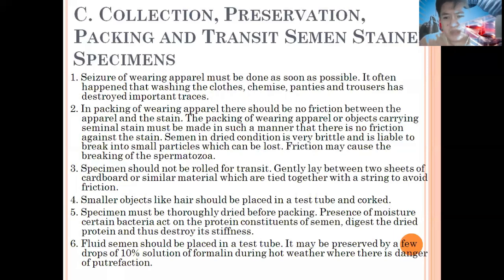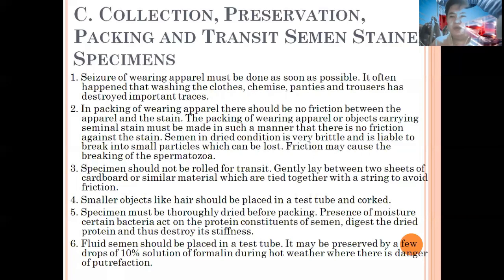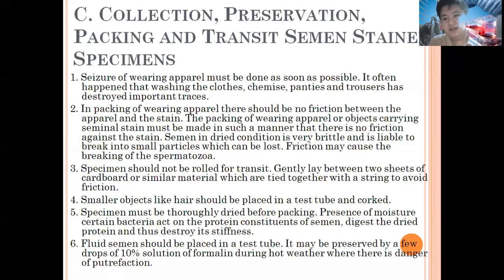In sexual offense cases, you can collect the underwear, condoms if present, or bed sheets. These are the basic pieces of evidence to collect in order to trace seminal stain. When packing apparel or clothing collected at the crime scene that allegedly has seminal stain on it, make sure to avoid friction. Do not fold the area where semen is allegedly deposited — leave it in its original status.